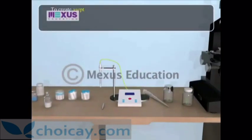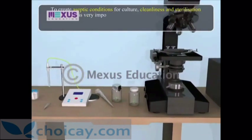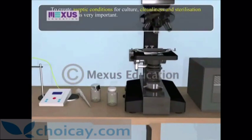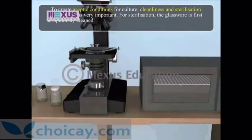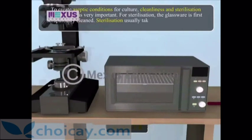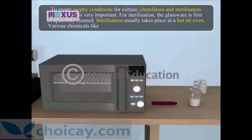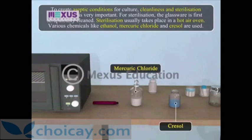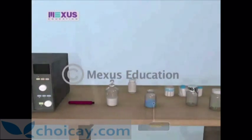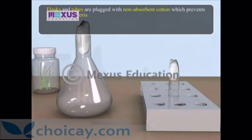To create aseptic conditions for culture, cleanliness and sterilization of glassware is very important. The glassware is first scrupulously cleaned, and sterilization usually takes place in a hot air oven. Various chemicals like ethanol, mercury chloride and cresol are used for this purpose.